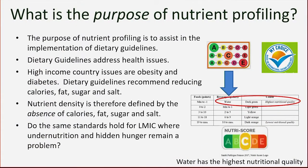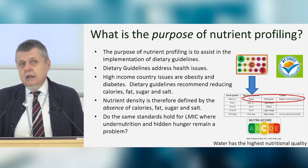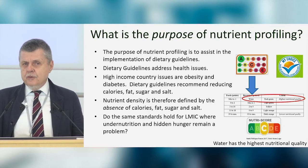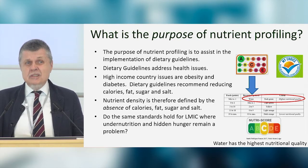There's always a purpose behind nutrient profiling — it is done for a reason. Nutrient profiling is meant to assist in the implementation of dietary guidelines, which address specific health issues. In high-income countries the major issues are overweight, obesity, and non-communicable diseases. The dietary recommendations are to reduce calories, fat, sugar, and salt, and nutrient profiles penalize foods for having excess of these. The first question is whether this framework is suitable for low- and middle-income countries where nutrient deficiencies are still common.